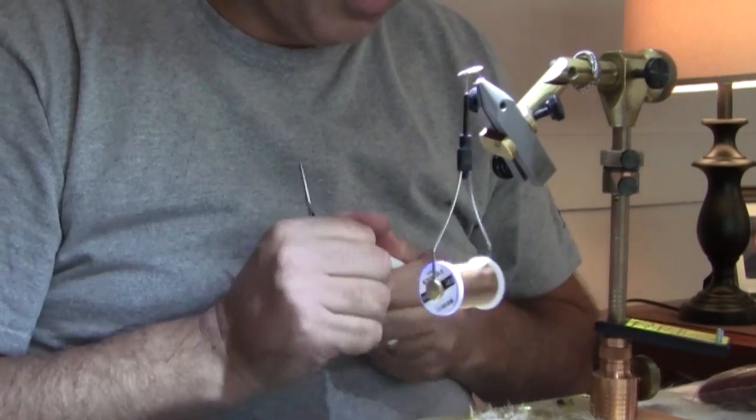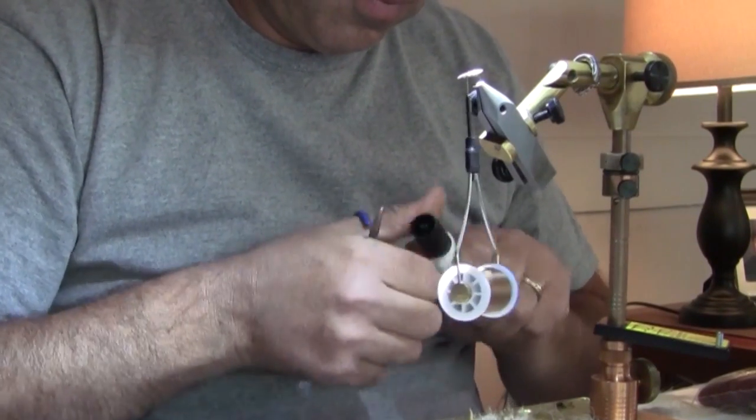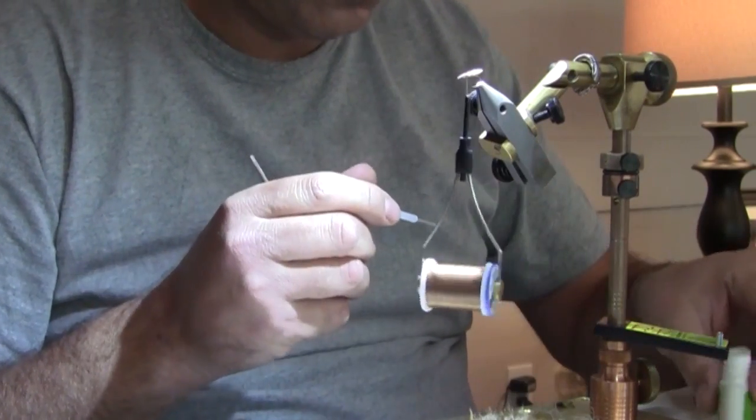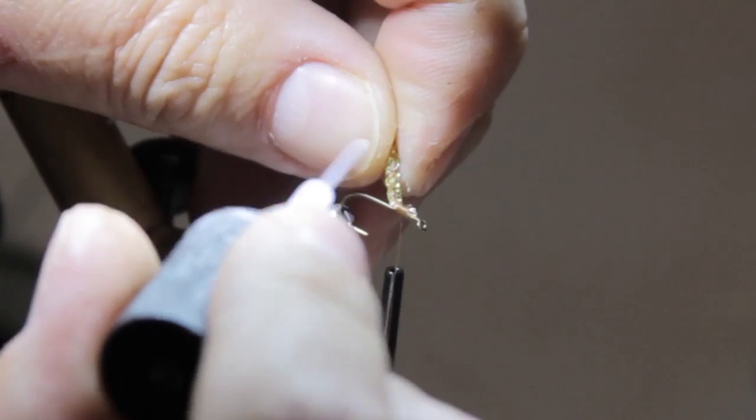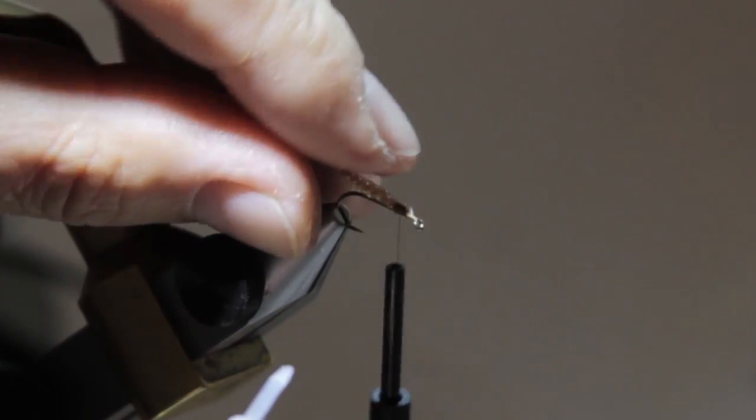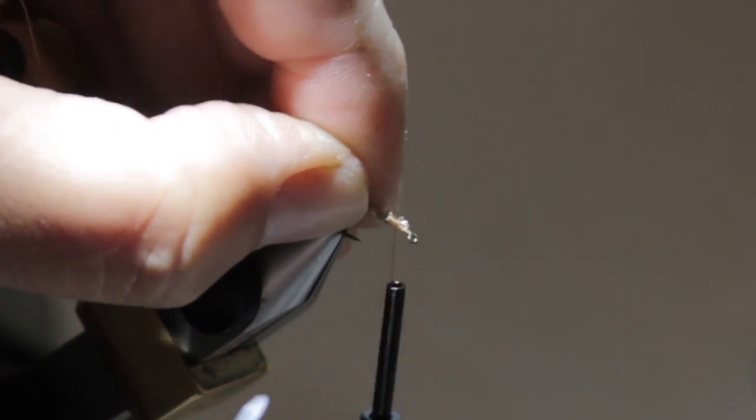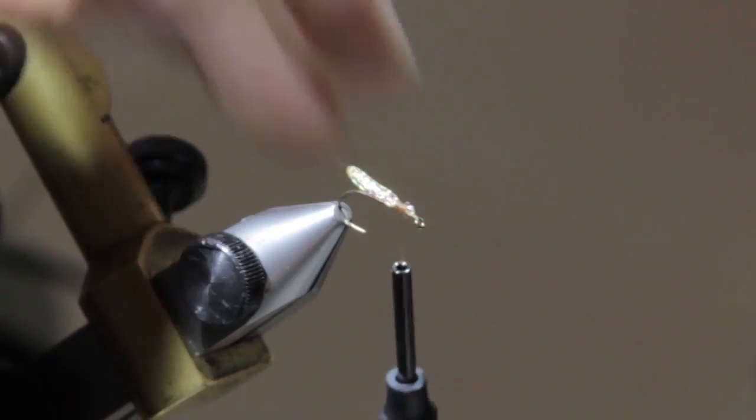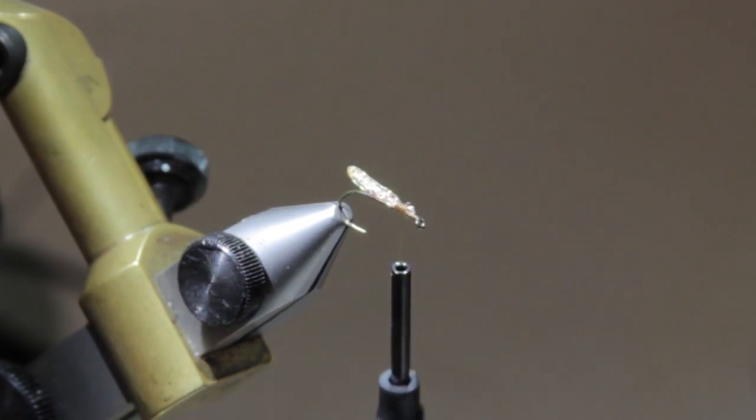Take a little zap-a-gap, put this on the shank of the hook. Stick this down on there and just kind of get it to adhere to the hook. That will keep it from whipping around.